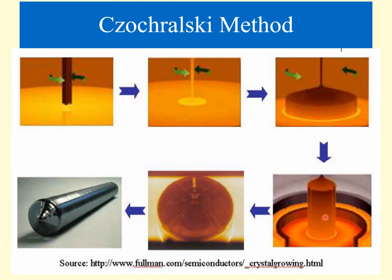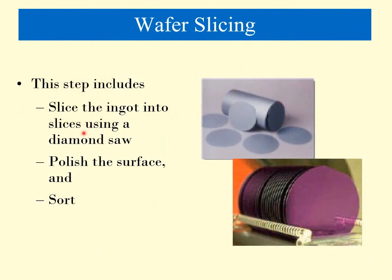Once the puller is pulled up, crystal formation takes place. The molten silicon after crystal formation takes on a boule-like structure. This is the boule-like structure — this is what the final silicon boule looks like. This is how the single crystal silicon is generated.